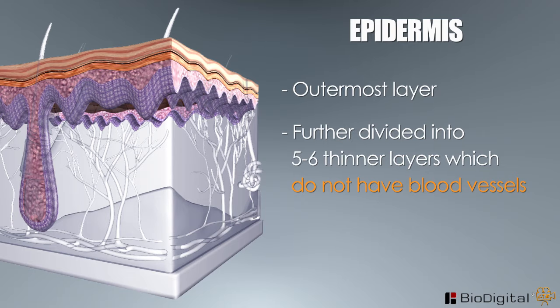Stratum corneum. This is the uppermost layer of the skin which constantly sheds, or where the dead skin cells are sloughed off. Essentially, the top layer of the skin is composed of dead cells.